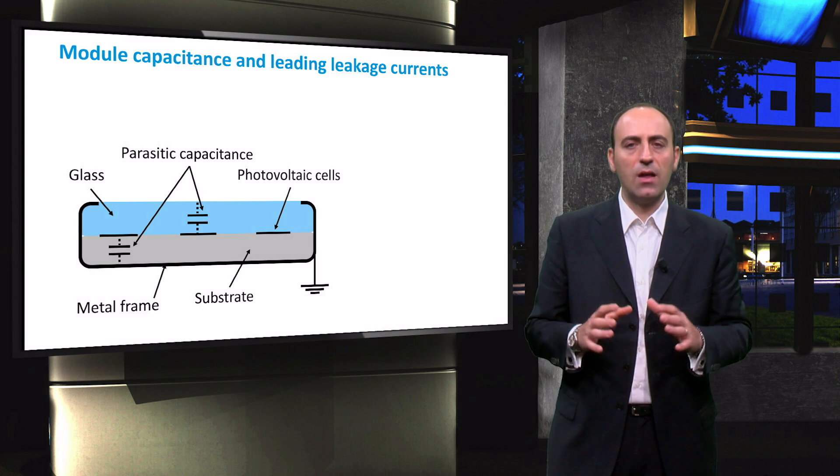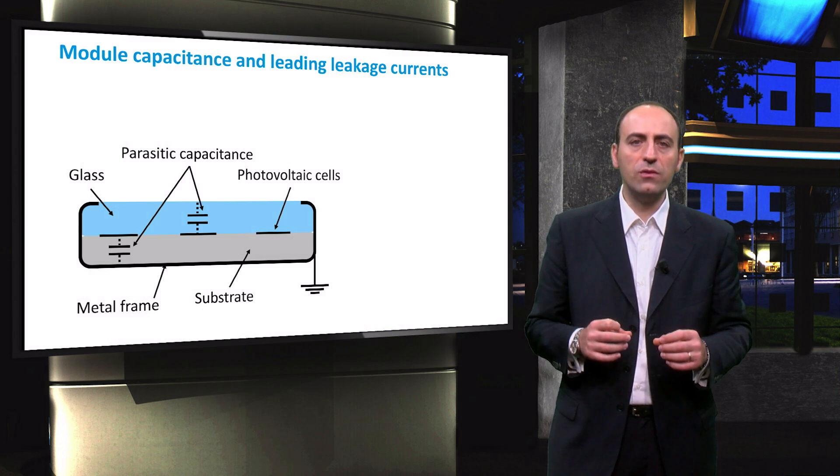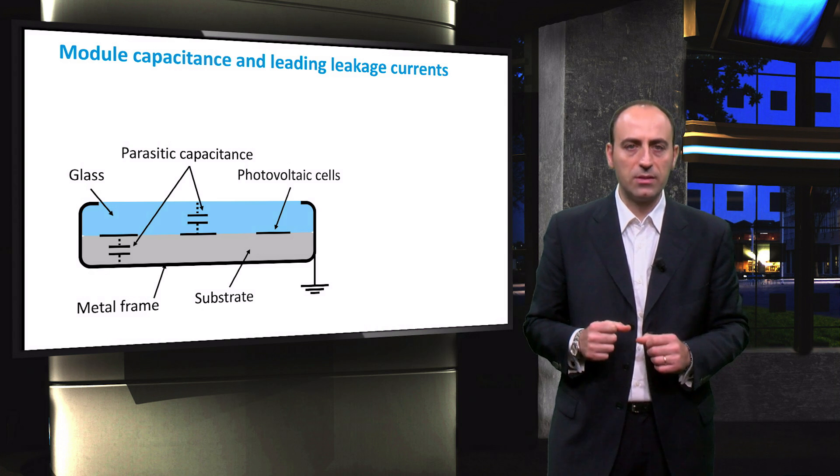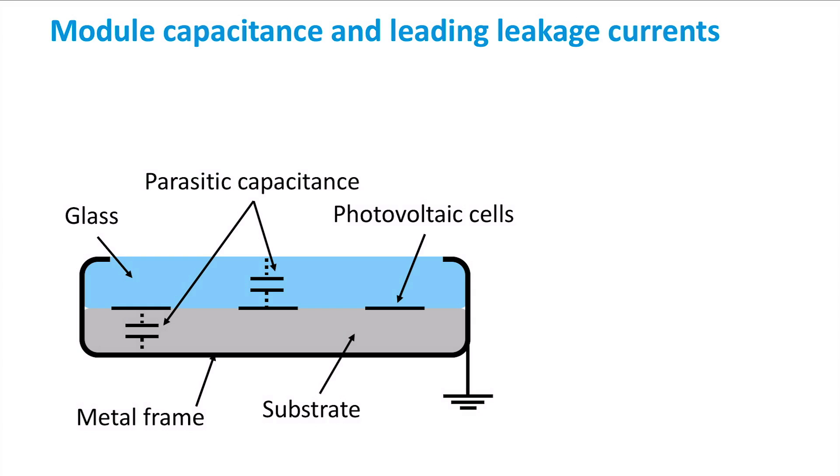This capacitance is undesirable and it is referred to as parasitic capacitance. The parasitic capacitance is given by the relation shown. Epsilon nought is the vacuum permittivity or electric constant. Epsilon r is the relative static permittivity and it depends on the medium. A is the cross-sectional area of the capacitor,